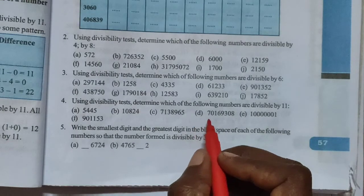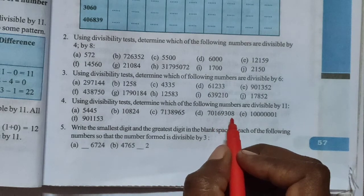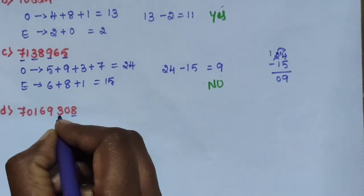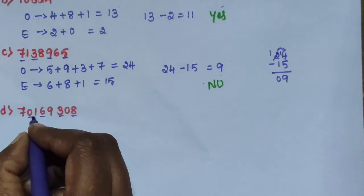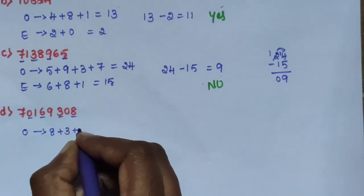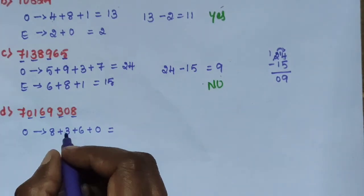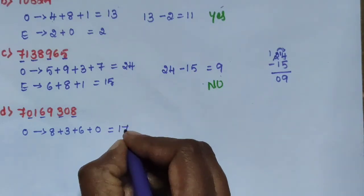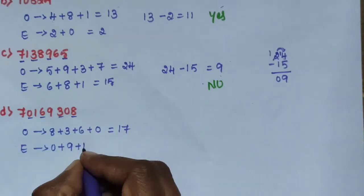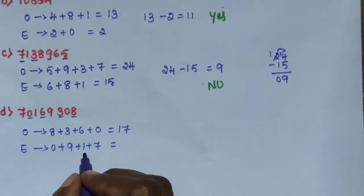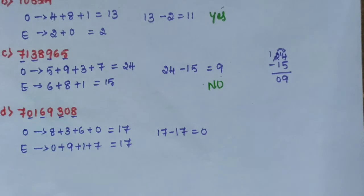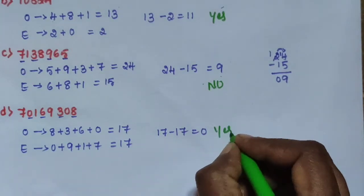Sub question D: 7 crore, 1,69,308. Sum of digits at odd places from the right: 8 plus 3 plus 6 plus 0 equals 17. Remaining digits are even places. Difference is 0. Then divisible by 11 is yes. Answer is 0.